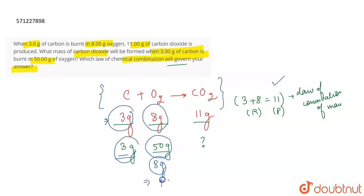So basically 42 gram of oxygen will be left. 42 gram of oxygen will be left because only 8 gram is going to react with it and 11 gram of carbon dioxide is going to be formed.